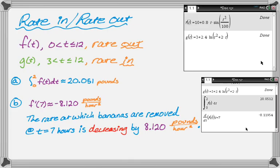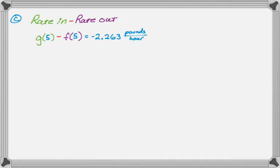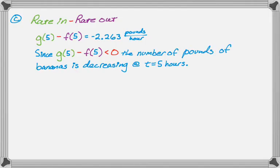Okay, so increasing or decreasing at t equals 5 and give a reason. So for increasing or decreasing, I'm just going to do rate in minus rate out. If the overall rate is negative, then the number of bananas is decreasing. If it's positive, then the number of pounds is increasing. So use calculator to find g of 5 minus f of 5. This gave me negative 2.263 pounds per hour. So I'm going to say since g of 5 minus f of 5 is less than 0, the number of pounds of bananas is decreasing at t equals 5 hours. Not super complicated.